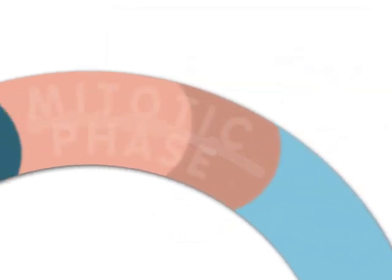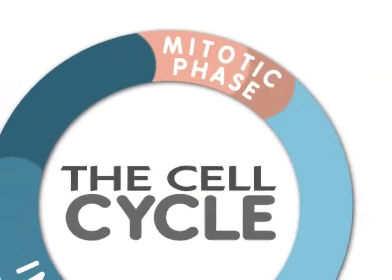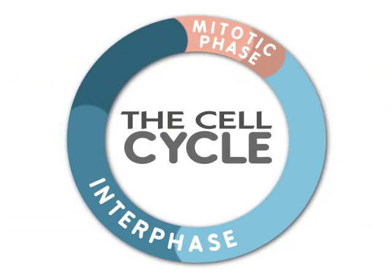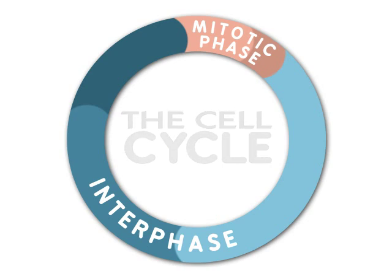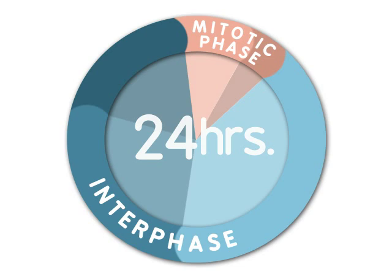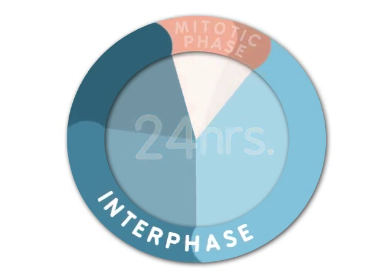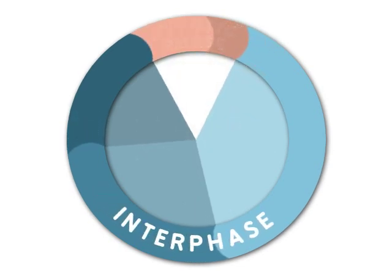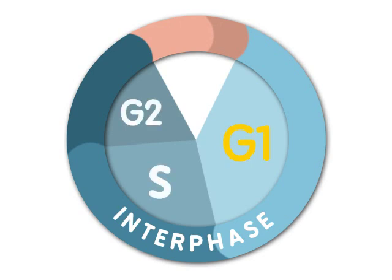Mitosis is only one part of what is called the cell cycle. For many eukaryotic cells, a cell is duplicated every 24 hours. Most of the life of a cell is spent in interphase. Interphase consists of three stages called G1, S, and G2.